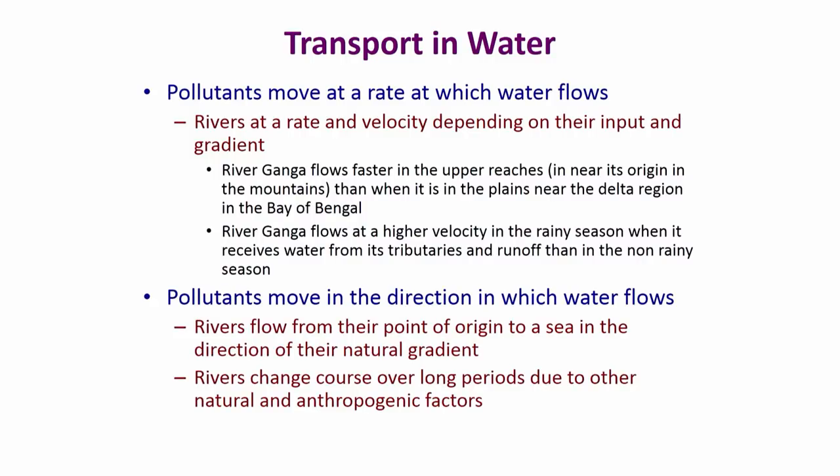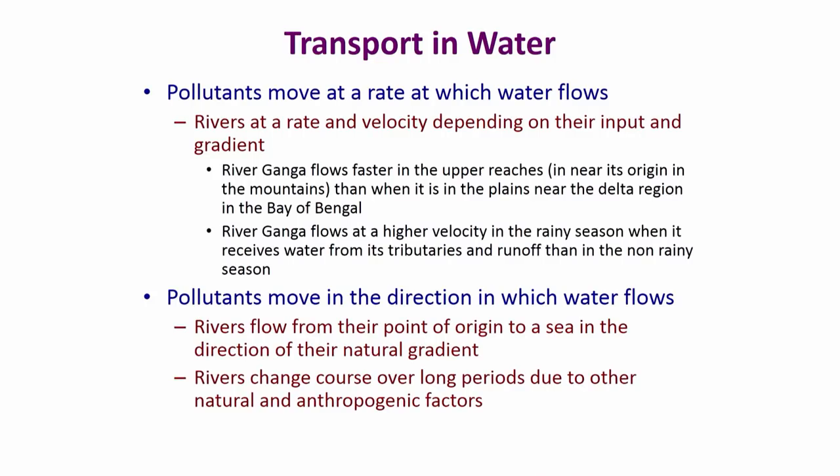Transport in water: pollutants move at a rate at which the water moves, by and large. Pollutants move along with flowing water. Rivers in general move at a velocity that depends on the amount of water they receive and also on the slope of the river. For example, the river Ganga flows very fast in its upper reaches when it is in the hills compared to when it reaches the plains near the delta region near the Bay of Bengal. The Ganga also flows at a higher velocity during the monsoon period when it receives a lot of water inflow from its tributaries, and definitely the pollutant moves in the direction in which the water moves.